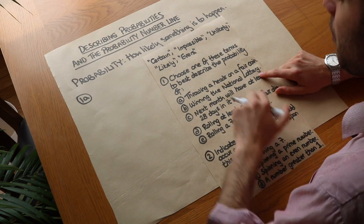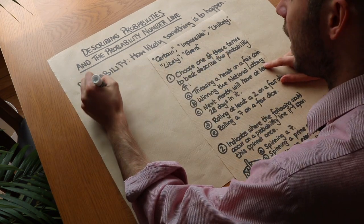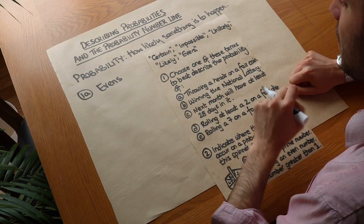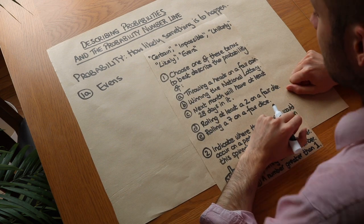And we have a special word for that. We say that the probability is even. And that means there's the same chance of it happening, i.e. getting heads, as there is of it not happening, i.e. not getting a heads.